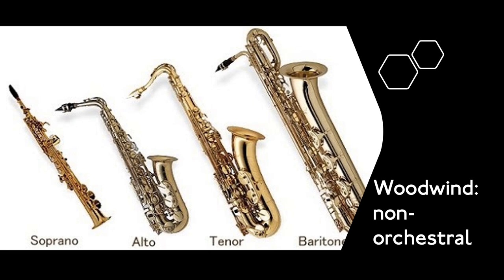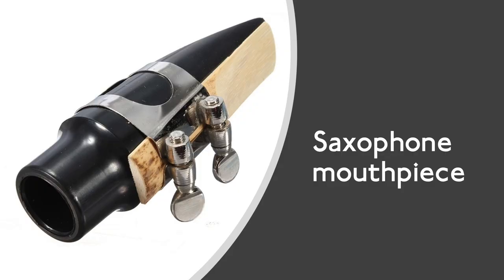Sometimes people get confused about what kind of instruments saxophones are. Saxophones come in different sizes — these are the four most common kinds. Although they're made of metal, they're actually woodwind instruments. This is because they have a reed which is very similar to a clarinet reed, so the sound is actually produced by the vibrations of the reed. That is what makes it a woodwind instrument. Don't make the common mistake of thinking that a saxophone must be a brass instrument — it isn't.